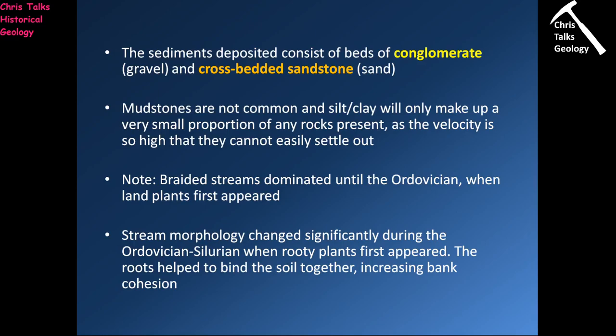In terms of geological history, braided rivers were actually the dominant type of river until the Ordovician — around 480 million years ago. Around that time, the first land plants appeared, and as plants with large root systems became more common moving into the Silurian, those roots began to bind river banks together, increasing the cohesiveness of material and making it more difficult for rivers to erode. As a result, braided rivers became less common and meandering rivers became more common.